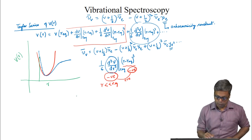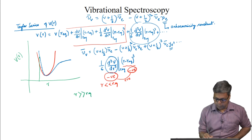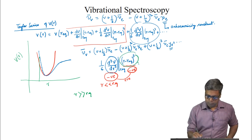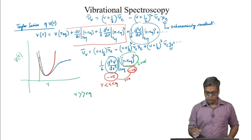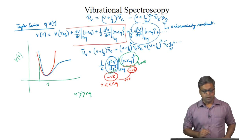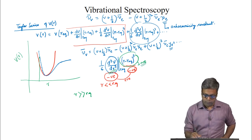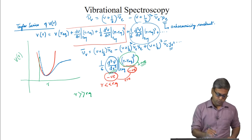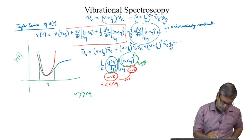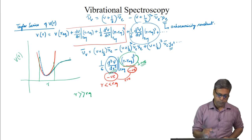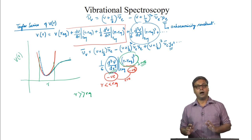On the other hand, for r much greater than r_equilibrium, the (r minus r_equilibrium) term will be positive, so the product will be negative because we multiply a negative third derivative by a positive term. This means that for the same value of r, V(r) will have a smaller value — meaning this potential will be shallower at r greater than r_equilibrium.